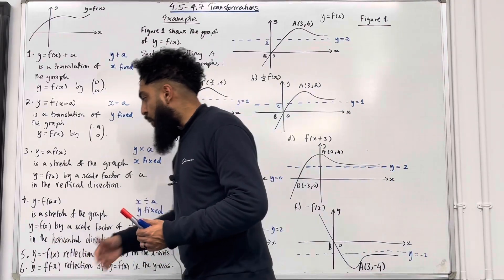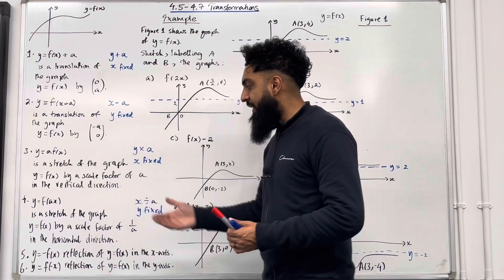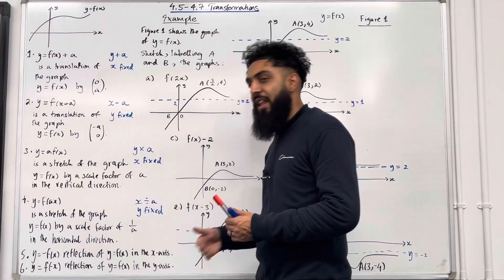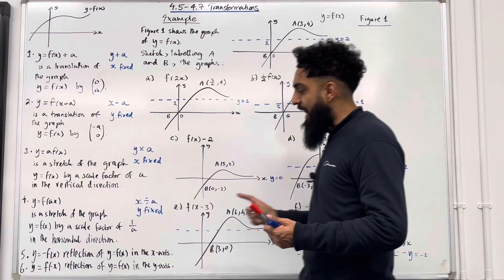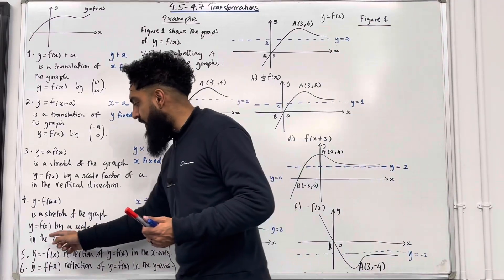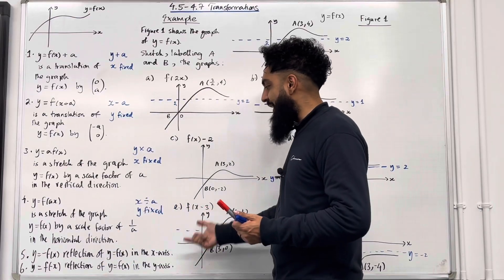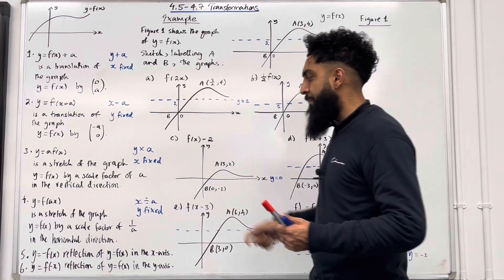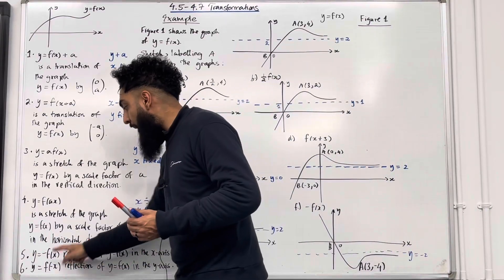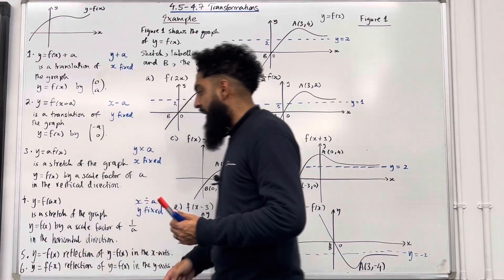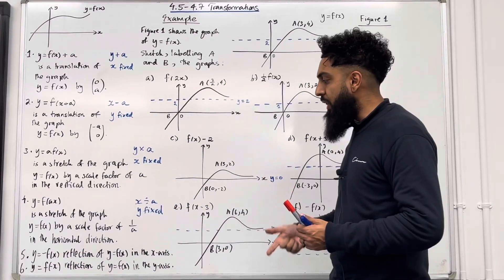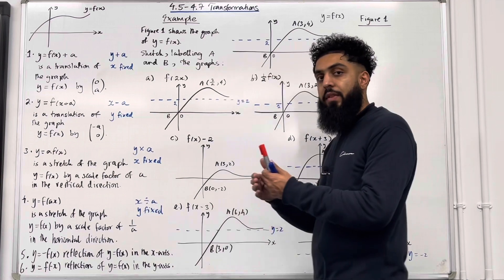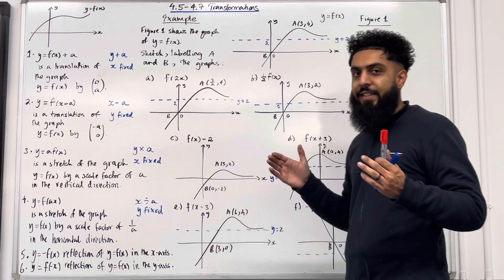Number 5: y equal minus f of x is a reflection of y equal f of x in the x-axis. So if the negative is outside the function, it's a reflection in the x-axis. Number 6: y equal f of minus x — the negative is inside the function — represents a reflection of y equal f of x in the y-axis.